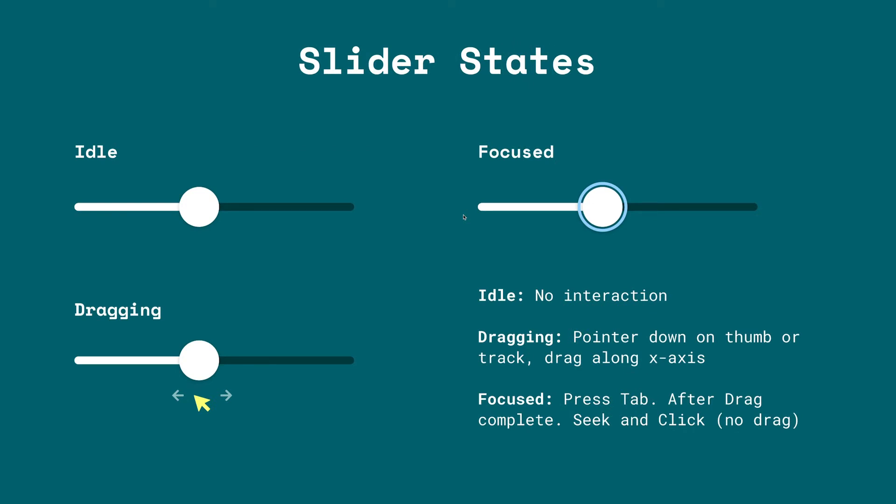With state machines and state charts, it's really important to understand the different states the component could be in, so it's easy to model the logic or draw a visual flowchart to see the different states and how you transition between them. The slider component has three different states: the idle state, which means no interaction is happening; the focus state, when you press the tab key to set focus on the slider; and the dragging state, when you put your pointer along the slider track and scrub the value by moving your pointer.